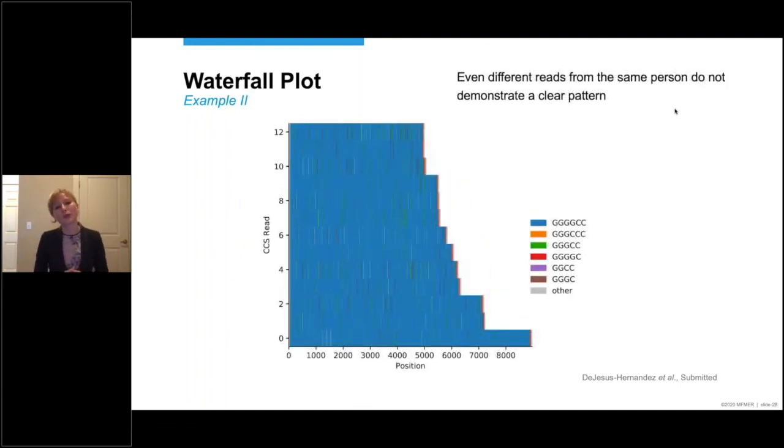This is another individual. And it's a slightly different waterfall plot. Because here, we're still specifying the GGGGCC repeat in blue. But other potential motifs are shown with different colors. The most common alternative motif appears to be the one with three G's and two C's. So one G less, and it's shown in green. And I realize it might be difficult to see on this slide. But really, even different reads from the same person show another pattern. So there is really no clear pattern.